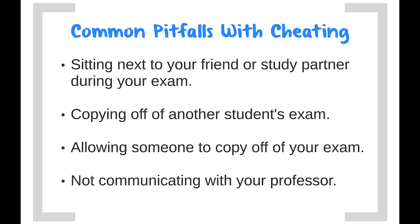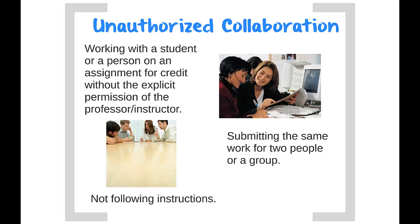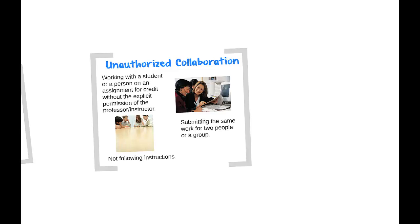Throughout your various classes at UCLA, you will be encouraged to collaborate, work in groups, or submit group projects. Yet students often find themselves in difficult situations when collaborating on assignments when they are not supposed to. Unauthorized collaboration is working on an assignment with another person without receiving the professor or instructor's approval. We have experienced situations where students fail to follow instructions when a professor has expressed that students must do individual work, or where students believe that because they are working together, they should submit the same work. Unless stated otherwise, you are to submit your own original work.